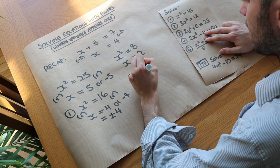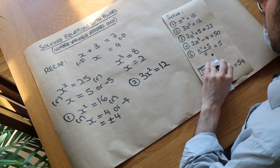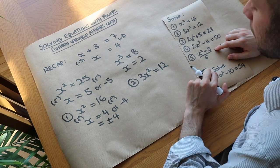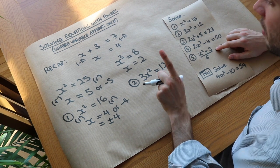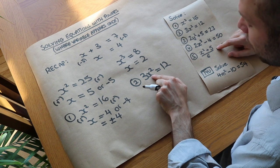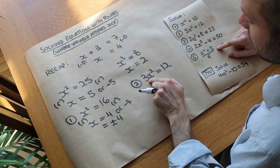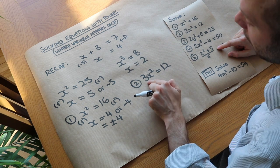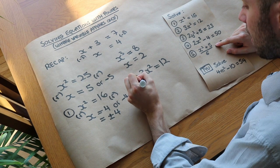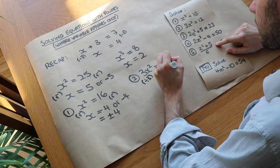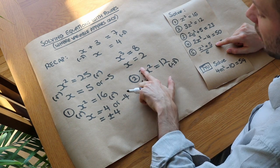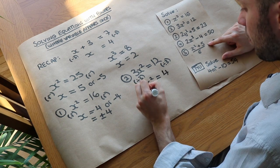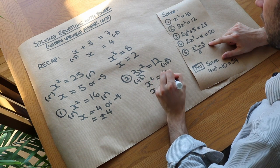Question 2: 3x squared equals 12. Some students try to square root both sides straight away, getting 3x on the left and the square root of 12 on the right — but that's wrong. Thinking about BIDMAS, powers come before multiplication, so x gets squared first, then multiplied by 3. We need to go backwards: divide both sides by 3 first, giving x squared equals 4, then square root both sides to get x equals plus or minus 2.